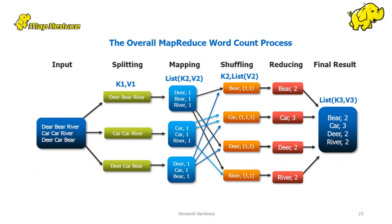The tasks are processed in a completely parallel manner to scale data processing over multiple computing nodes. The input and output jobs are stored in a file system. The framework takes care of scheduling tasks, monitoring them, and re-executing failed tasks. The MapReduce framework can easily scale an application to run over tens of thousands of machines in a cluster through a configuration change.